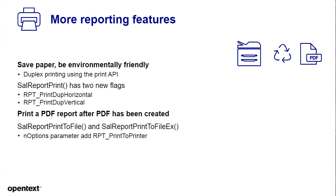There are more reporting features. You can be more environmentally friendly by using the duplex printing features of the SAR report print API. Two new flags are available: report print duplex horizontal and duplex vertical. You can now control duplex printing from your own user interface or code. Additionally, the function SalReportPrintToFile, which creates a PDF file from a report, can now also invoke that PDF file to be printed after creation — a little more functionality for handling PDFs in Team Developer.